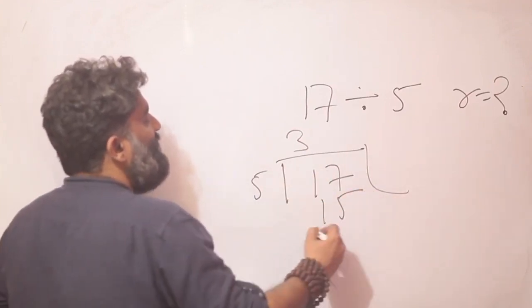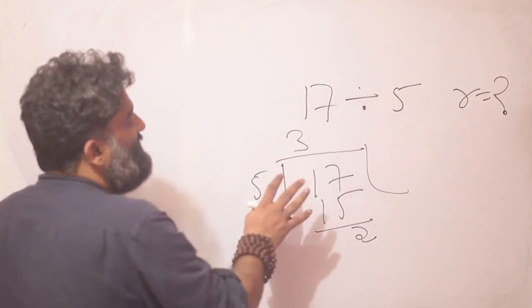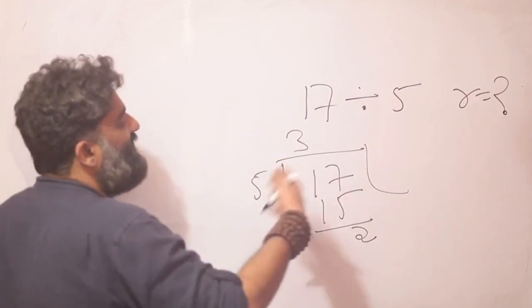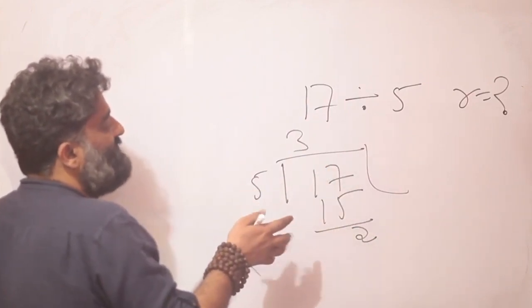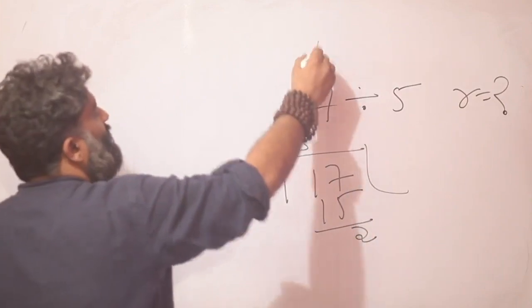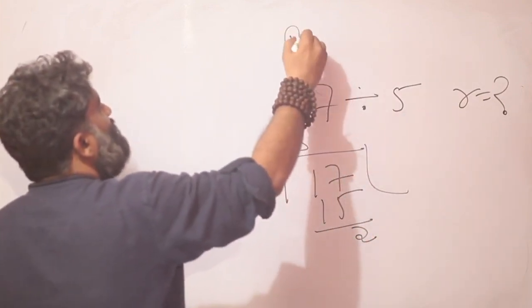5 threes are 15 and then I get 2. I can't divide any further. So just take a snapshot of this number or you could have taken any set of numbers to try and understand the process. So what are the numbers involved here? First of all, 17 and 5. 17 is known as the dividend.